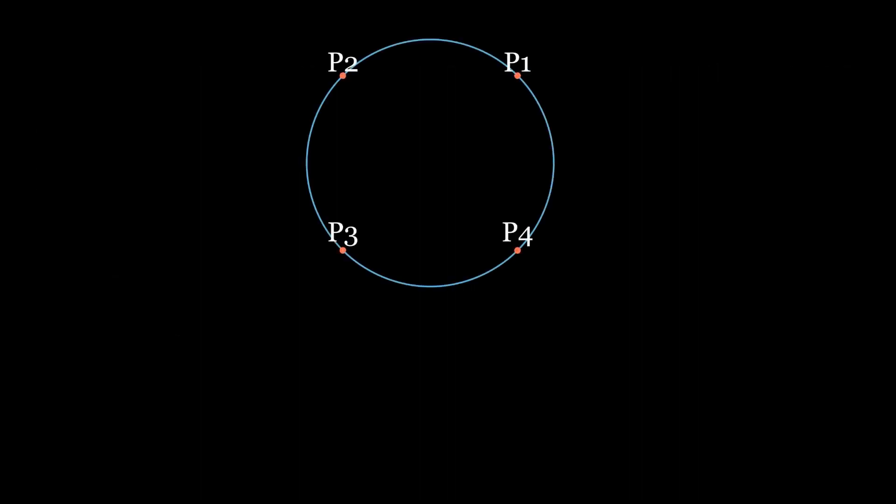A pair of chords is determined by four points on the circumference. Let's label the points as p1 through p4. We have three cases. Either p1 gets connected to p2, or p1 gets connected to p3, or p1 gets connected to p4.